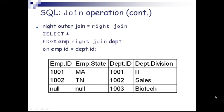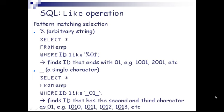RIGHT OUTER JOIN (equal to RIGHT JOIN): SELECT * FROM emp RIGHT JOIN DEPT ON emp.id = DEPT.id. Here, where there is no matching employee ID, the particular fields will be indicated with NULL values. The LIKE operation enables pattern matching selection: '%' represents an arbitrary string. SELECT * FROM emp WHERE id LIKE '%01' finds IDs that end with 01, for example 1001, 2001, etc. The underscore '_' represents a single character — SELECT * FROM emp WHERE id LIKE '_01_' finds IDs that have second and third characters as 01.